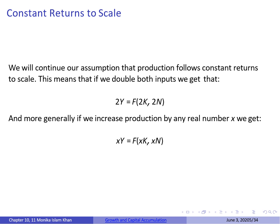Recall that in Chapter 6 we assumed constant returns to scale for our production function. We will continue that assumption here. Constant returns to scale means that an increase in inputs is translated into an equal increase in output. For this production function, if you increase both inputs — capital and labour — by 2 units, your output also increases by 2 units. More generally, if you increase all inputs by any real number x, output also increases by x.